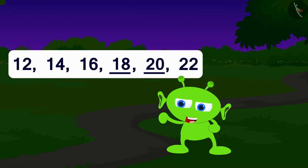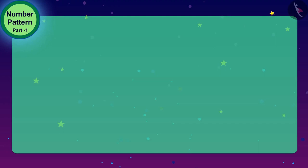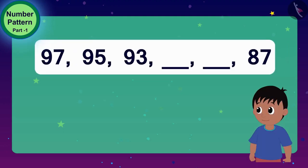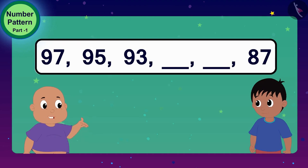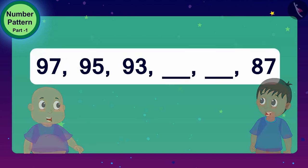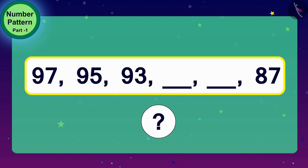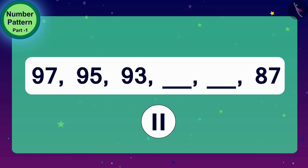Let's see if you can solve my next puzzle. The alien now showed his second puzzle to Raju and Bablu. Raju, this puzzle looks harder than the first puzzle. Yes, Bablu, let's find a solution together. Children, please also think about what is the rule of this number pattern. If you wish, you can stop the video and think of the answer.